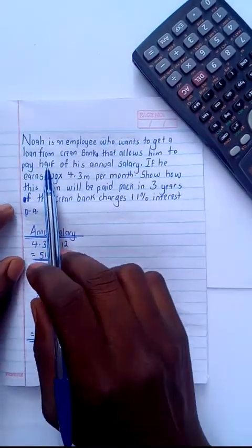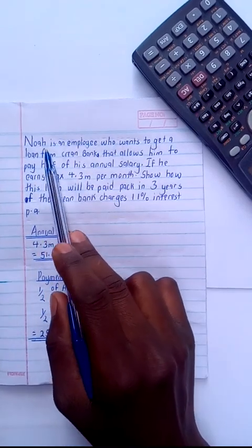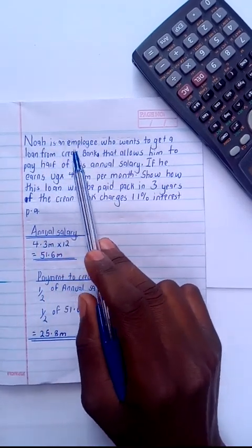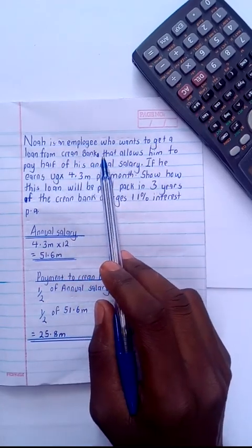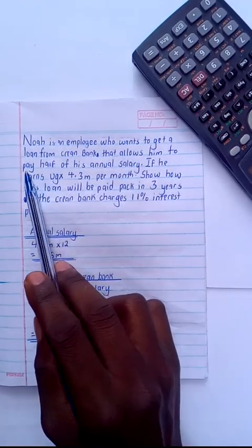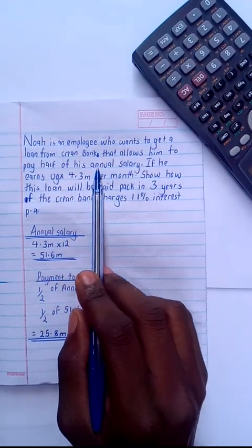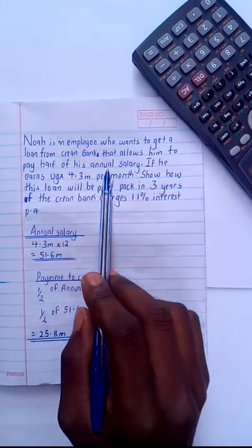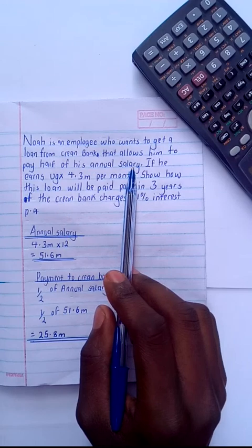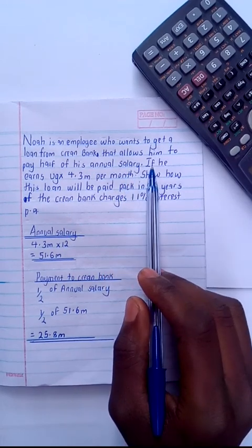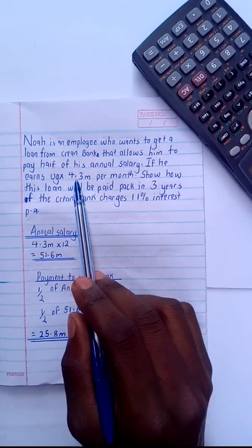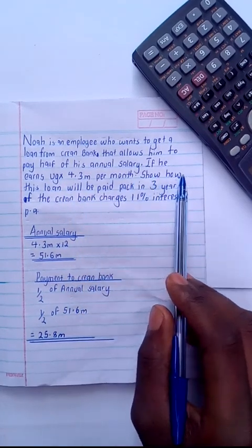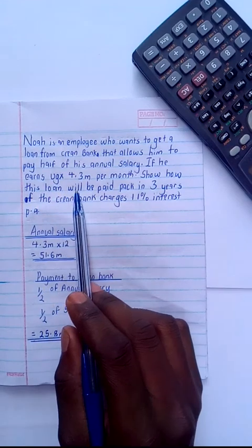Here I'm having an example which says Noah is an employee who wants to get a loan from Crane Bank that allows him to pay half of his annual salary. You have to be very keen with this example because it's somehow tricky. If he earns UGX 4.3 million per month, show how this loan will be paid back.